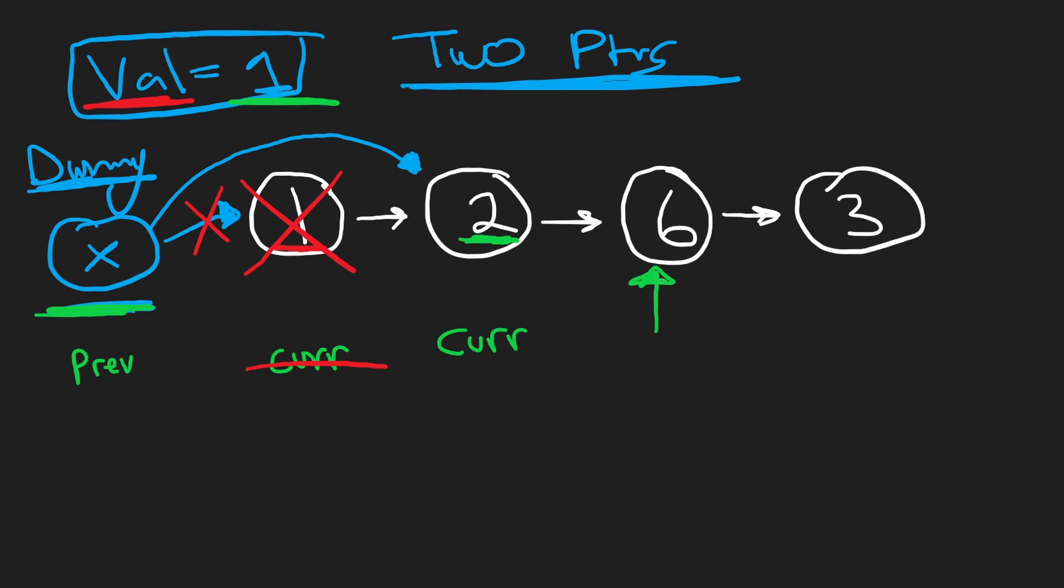We're going to shift our pointers. Now we're going to check six. In this case, since we did not remove two, there is a position for our previous pointer to now move to. So since we did not need to remove a node, we are going to shift our previous pointer. And now you might be able to see what we're going to keep doing with this algorithm. We're just going to notice that six is not equal to one. So we're going to repeat the same process, shift our pointers.